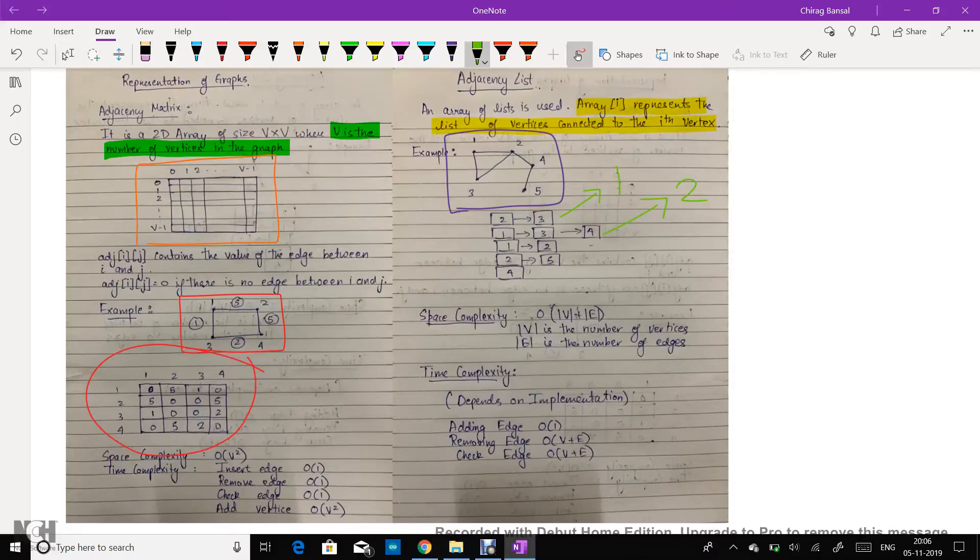Removing an edge might take order v plus e time, and we might have to iterate over the array of size v. And inside each list we might have to iterate over size of order e. Therefore the removing of edge takes order v plus e time.